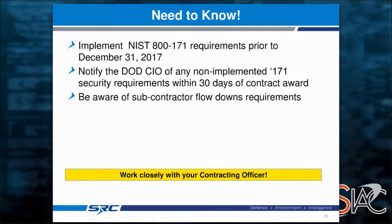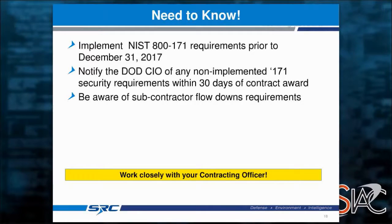Let's talk about how to implement 800-171 requirements. According to DOD, as of 30 December, we're supposed to have these requirements implemented by December 31, 2017. These are for your contractor information system — your srcinc.com networks, or if you're Lockheed, Boeing, or Raytheon, how you're going to protect those systems.